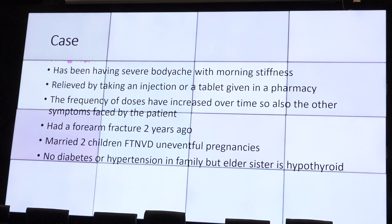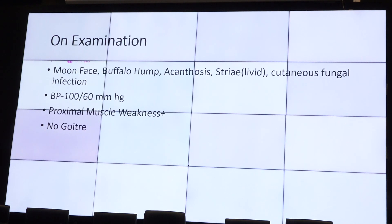Her history also revealed she had actually fractured a couple of years ago from trivial trauma, with no relevant family history. On examination, she was clearly Cushingoid: moon face, buffalo hump, low blood pressure. Exogenous Cushing's causes hypotension due to steroid withdrawal effects. There was severe proximal muscle weakness — she was finding it difficult to walk. When I asked her to show me the magical tablet, she revealed it was dexamethasone, which she was taking left, right, and center whenever needed.